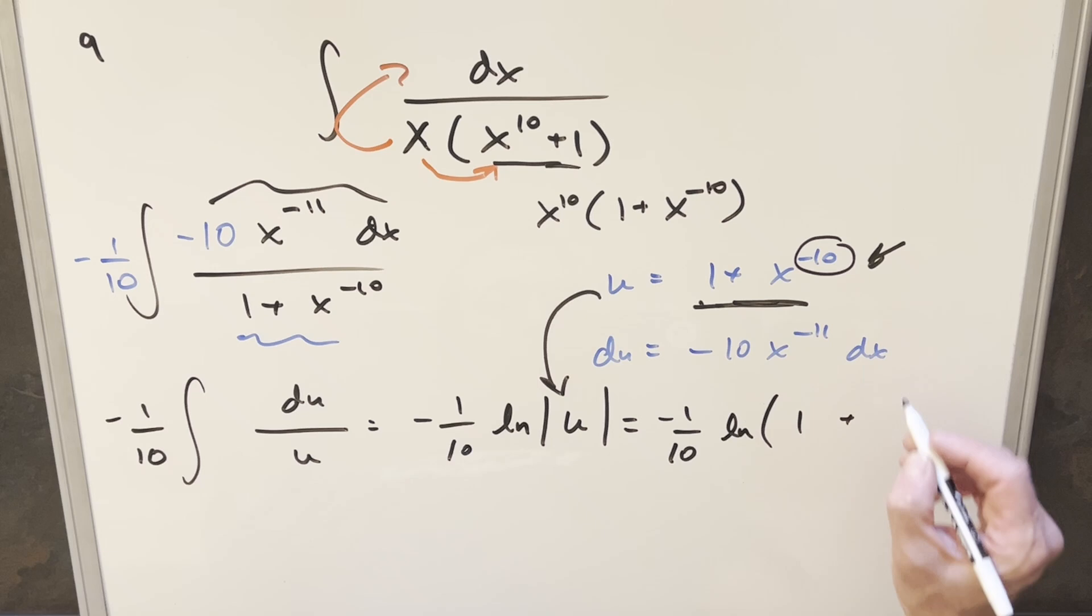And also, for x to the minus 10, let's rewrite this as 1 over x to the 10. And if this were really the Integration Bee right now, I would just leave it like this because time's a factor, and they'll take the answer in basically any form. But for a video, let's try to clean it up a little bit.